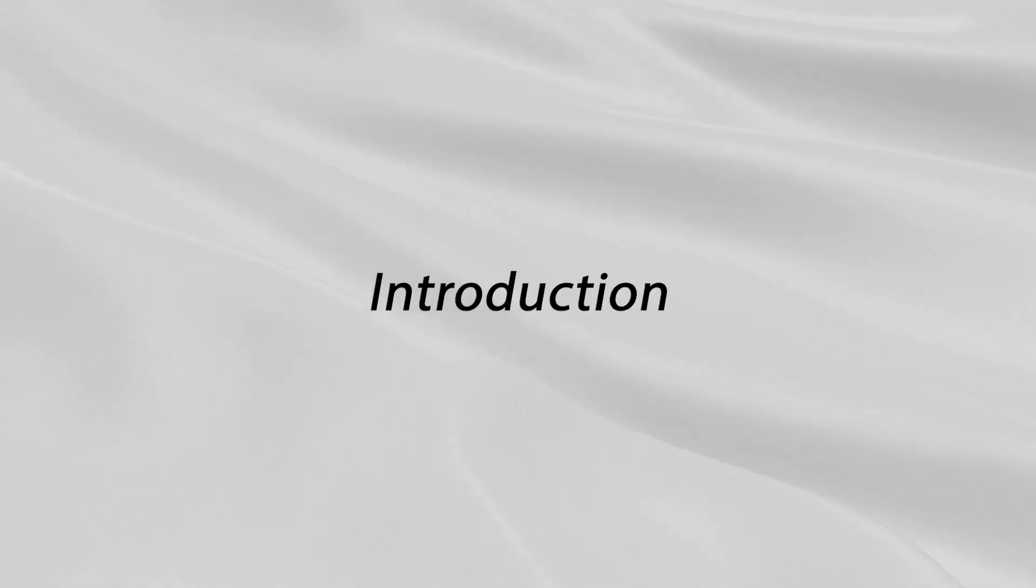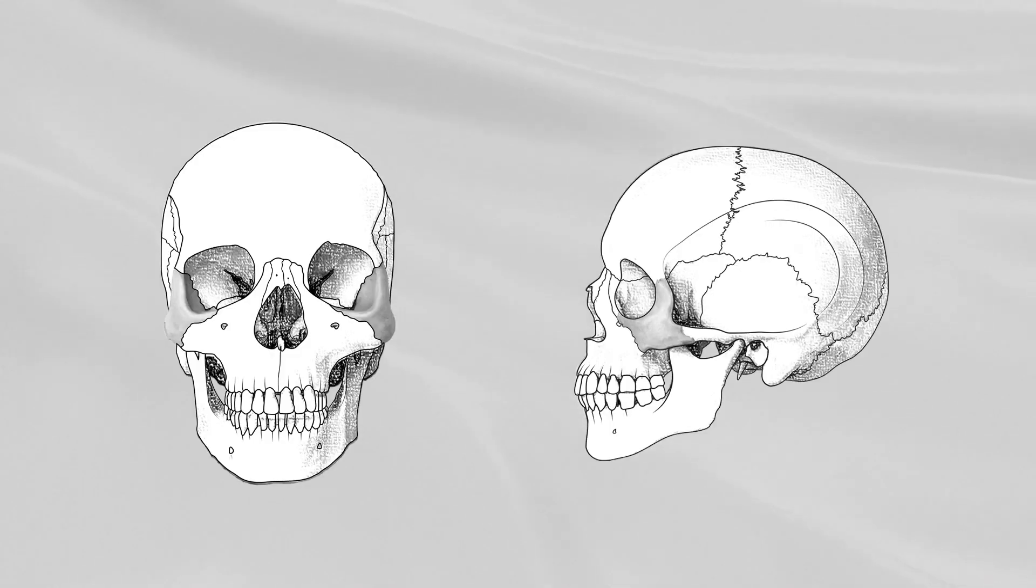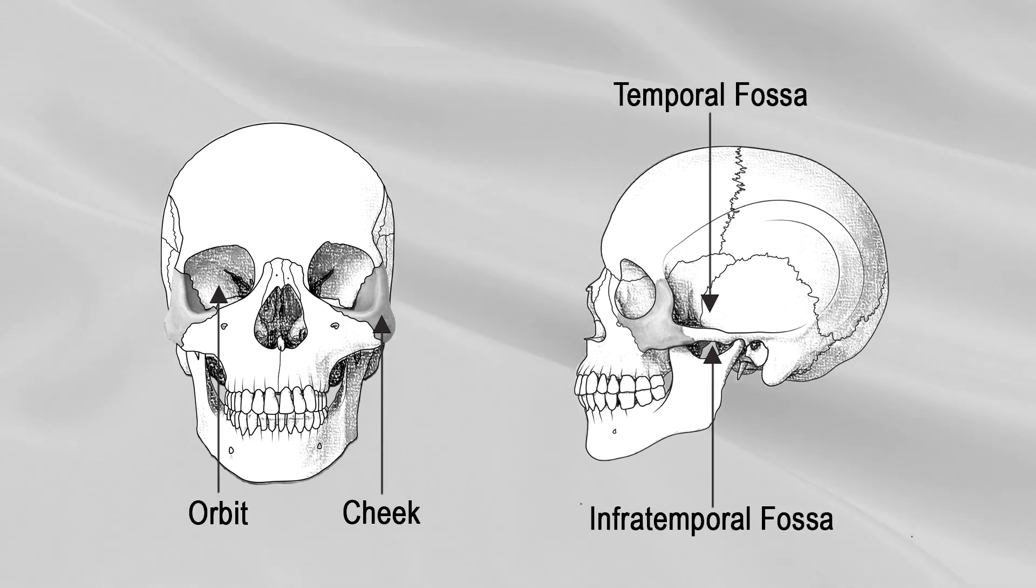Zygomatic Bone. Introduction: The zygomatic bone is small and quadrangular and is situated at the upper and lateral part of the face. It forms the prominence of the cheek, part of the lateral wall and floor of the orbit, and parts of the temporal and infratemporal fossae.